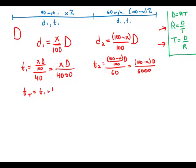So now to find the total time, of course, we add the two times together. And so what we're going to add, X D over 4,000 plus 100 minus X D over 6,000. Okay, I know this looks like a monstrosity, but this is not too bad. To find a common denominator of 4,000 and 6,000 turns out is relatively easy. It's just 12,000. That's the least common denominator.